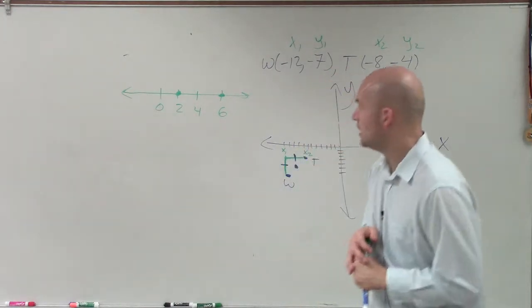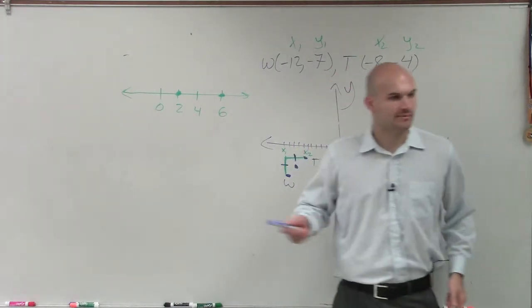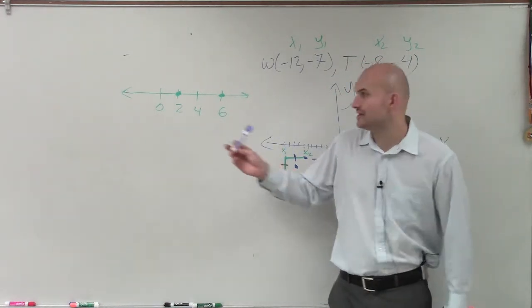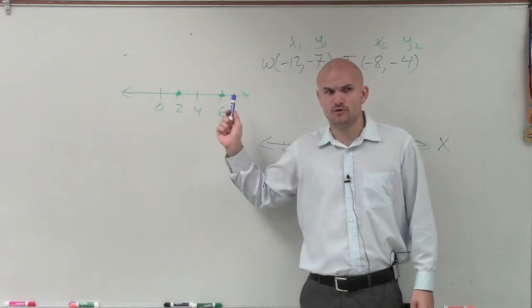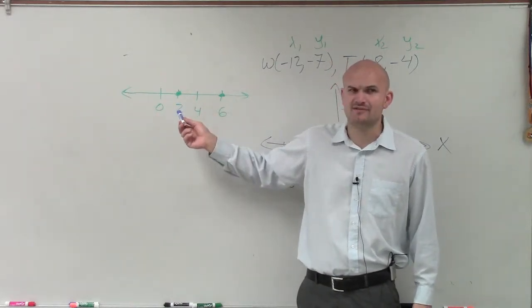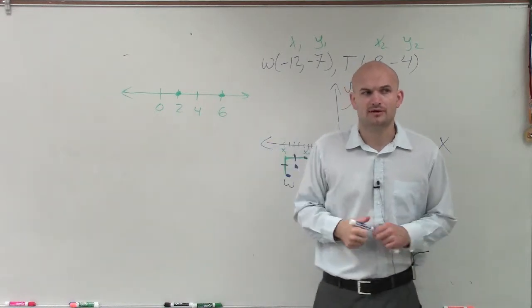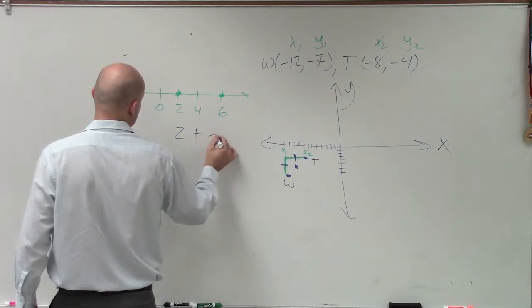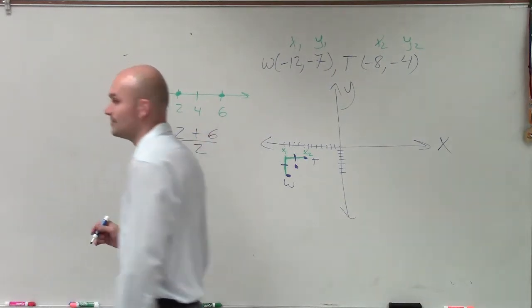So, ladies and gentlemen, I went over this in our notes when we first started talking about midpoint. If I want to find the middle between 2 and 4, some of you might say it's obvious, or between 2 and 6, you might say it's obvious it's 4. But the formula is to find the average.